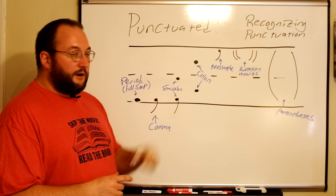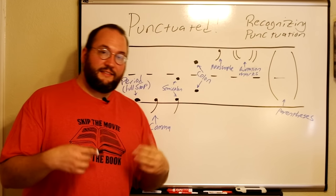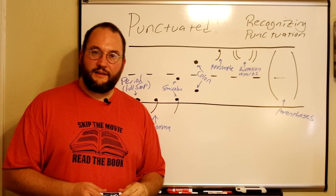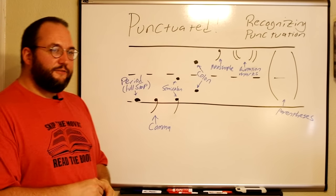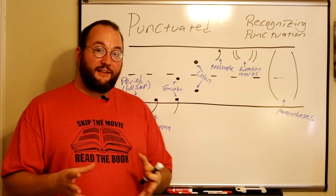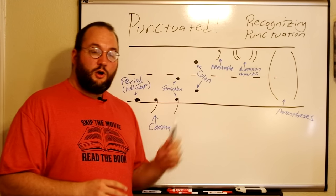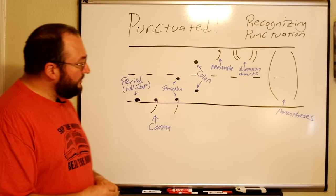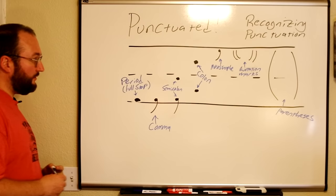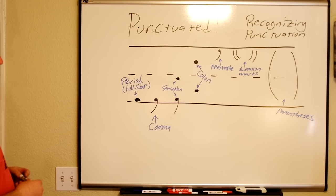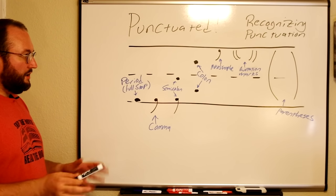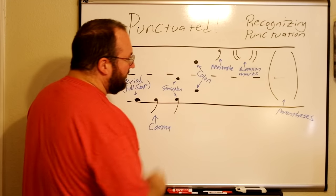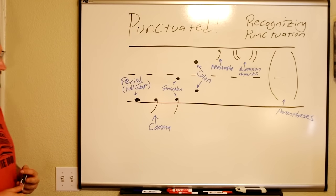Now there are other pieces of punctuation besides these like the M and N dash, the hyphen, single quotation marks, things like that. We'll get to those in a later video talking about the less used pieces of punctuation as those punctuation specific videos get closer. So in the meantime, these are the seven most basic pieces of punctuation and the next seven or more videos in this series we'll talk about how to use these pieces of punctuation.